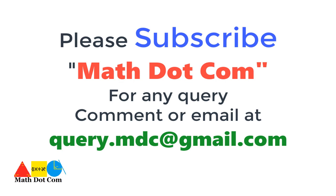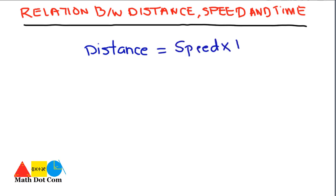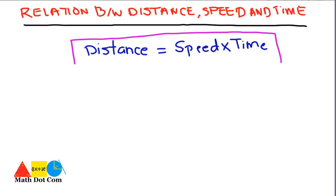Hello everyone. In today's lecture we will see how distance, speed, and time are related to each other. Let's find it out by means of a formula. We are given that distance is equals to speed multiplied with time. This is the basic formula that you have to keep in your mind whenever you are going to discuss speed, distance, and time.